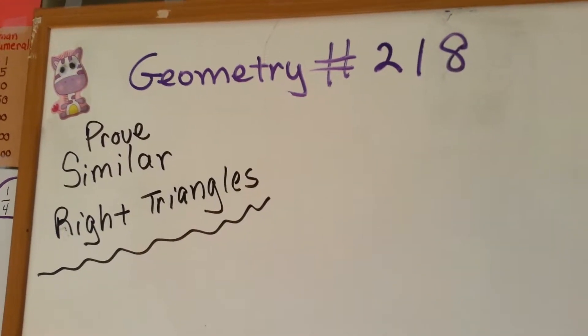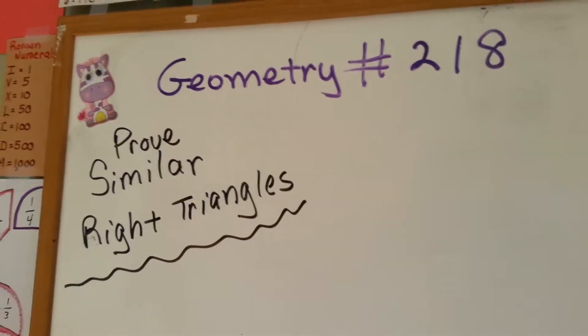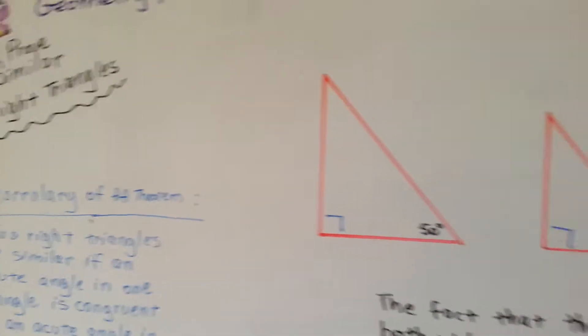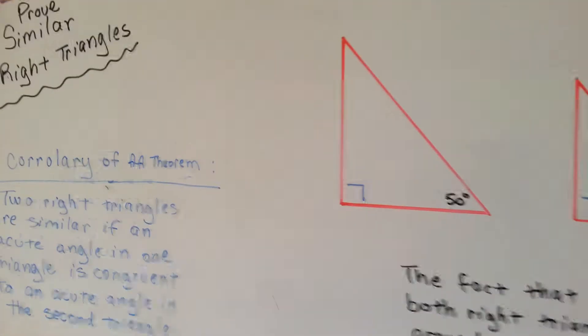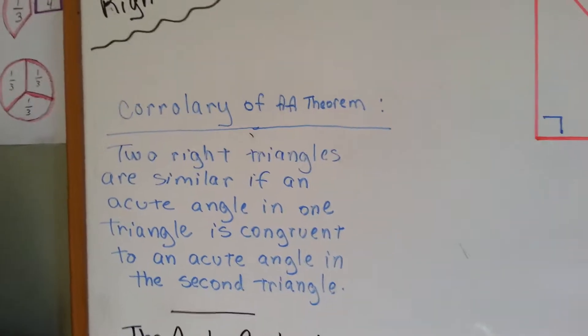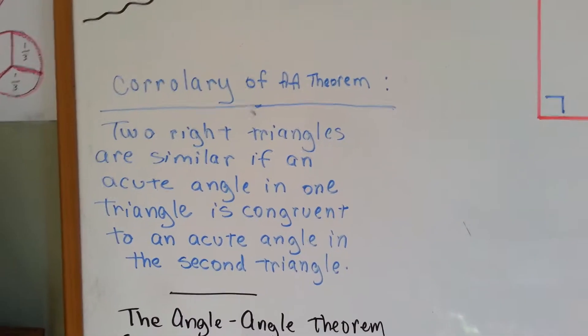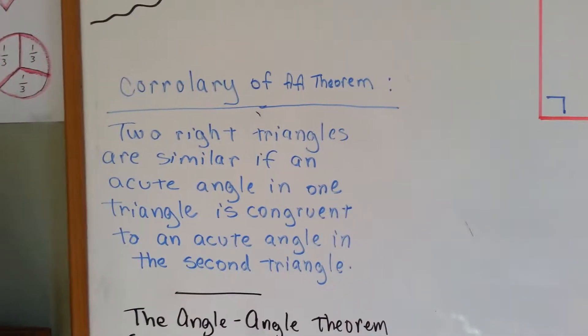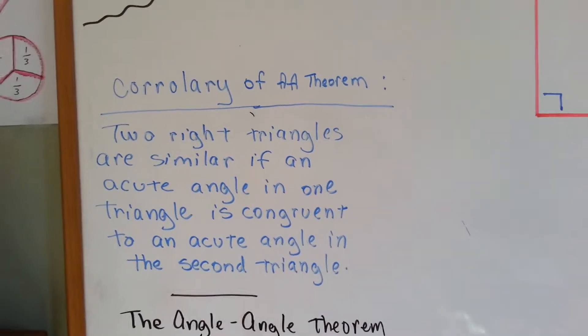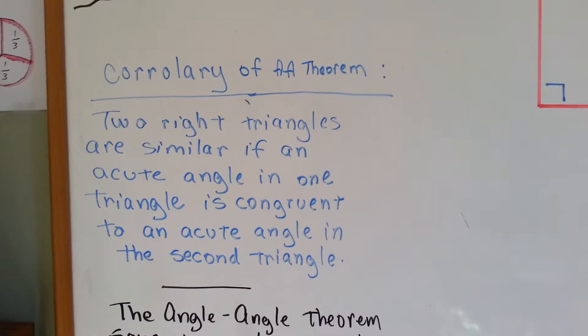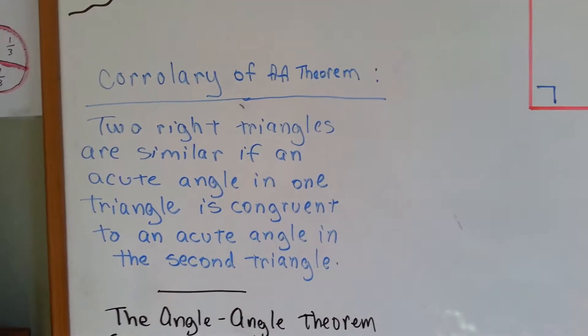Geometry 218 proves similar right triangles. All right, so we've got a couple of right triangles here. I'm going to show you a corollary to the AA theorem. Two right triangles are similar if an acute angle in one triangle is congruent to an acute angle in a second triangle.